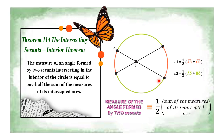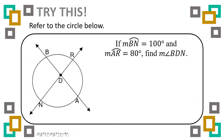Now let us have a direct application of this theorem. We have this illustration. It is given that the measure of arc BN is 100 degrees, and the measure of arc AR is 80 degrees. We are supposed to find the measure of angle BDN. Arcs BN and RA are the intercepted arcs of this angle, so we can directly apply the formula for Theorem 114.